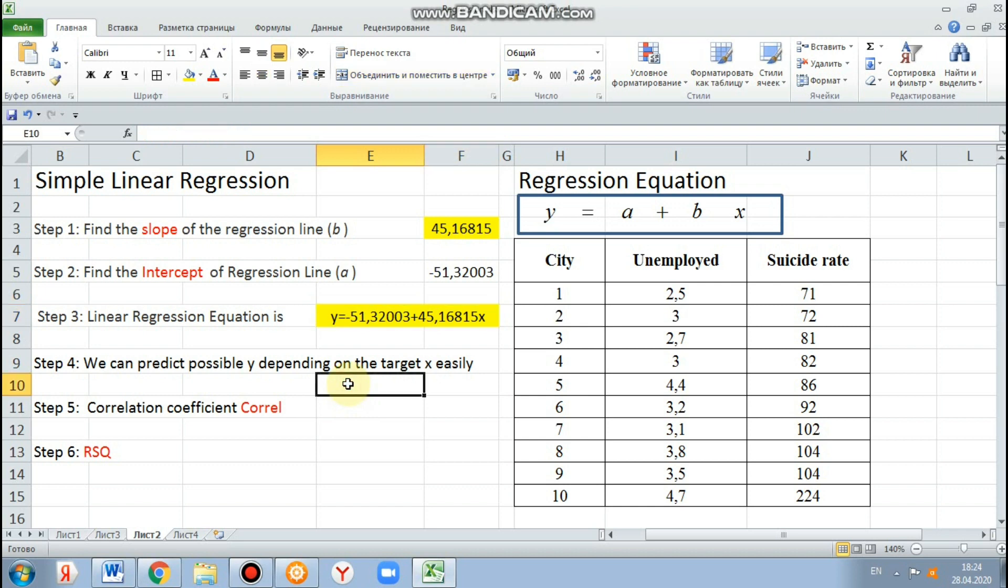For example, x equal 5. If we compute the suicide rate, we have to use this formula, regression equation. If unemployment equals 5, suicide rate will be 174.